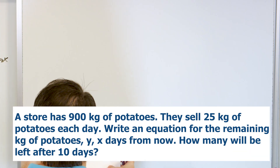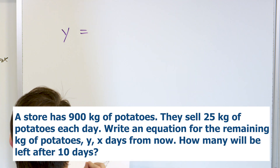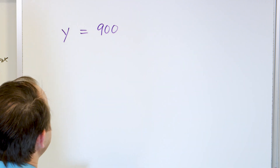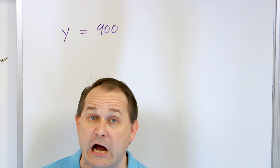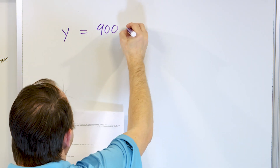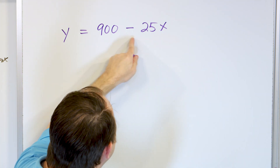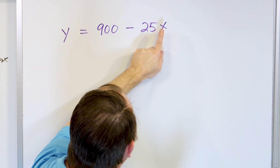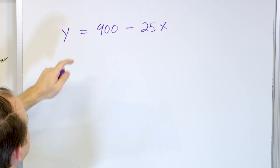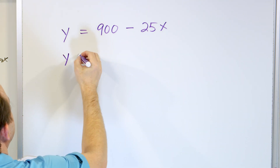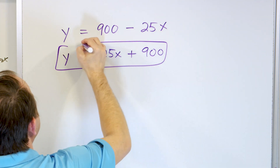Y is the number of kilograms of potatoes left. The store started with a shipment of 900 kilograms - this is the initial condition. As time goes on, they sell and subtract potatoes at a rate of 25 kilograms every day, and X is the number of days into the future. So on day one, take away 25 kg; day two, take away 50; day three, 75, and so on. Writing it as MX plus B: Y = -25X + 900.